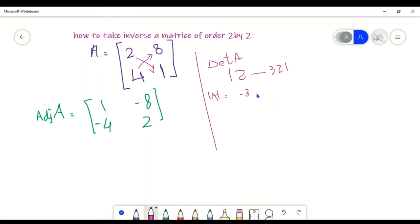Now according to that formula, we're going to apply it. So we've got adjoint over determinant of A, that is this entire matrix divided by minus 30.